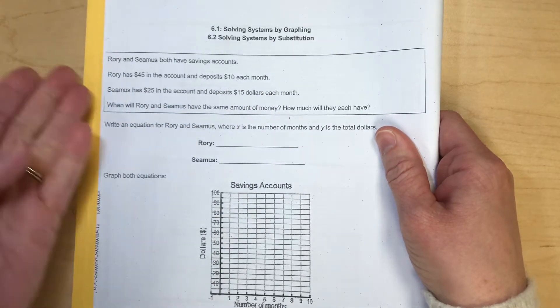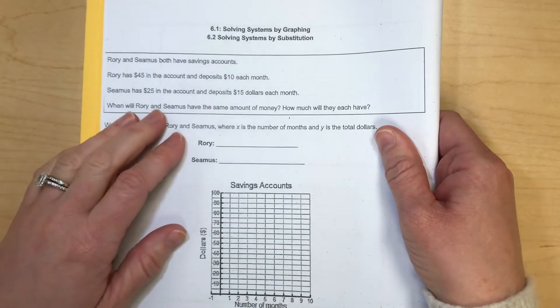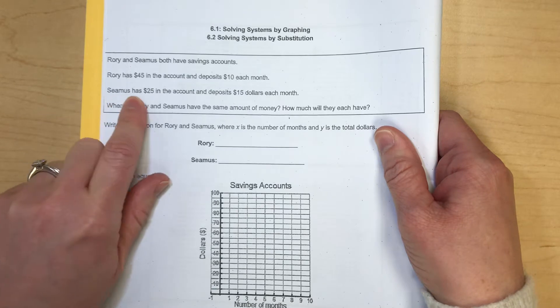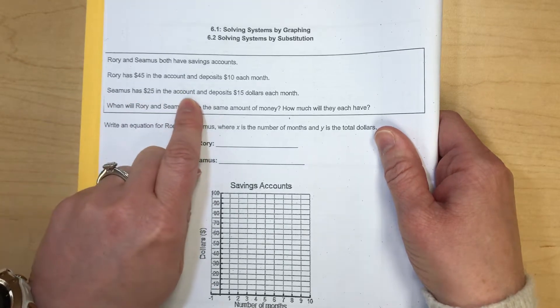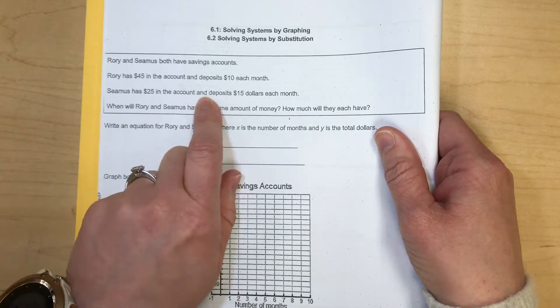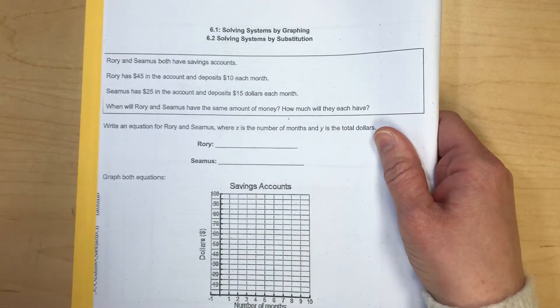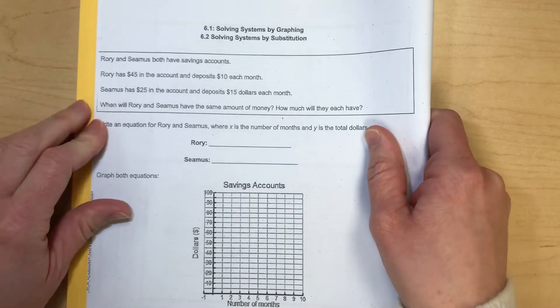I guess in this case, maybe Rory's not a dog because I don't know that dogs save money. But anyway, it's kind of funny. Seamus has $25 in the account and deposits $15 each month. So we're talking about savings accounts here, what you have to start and how much you're saving per month.